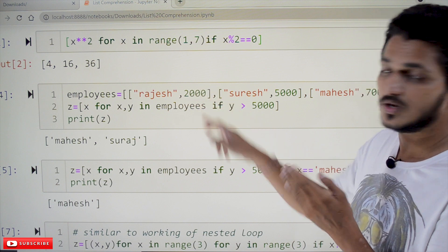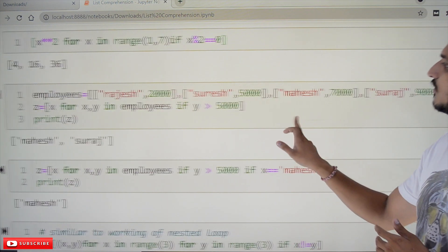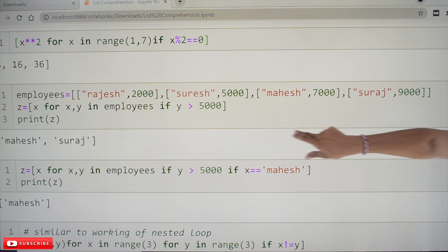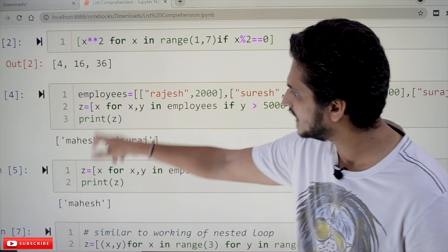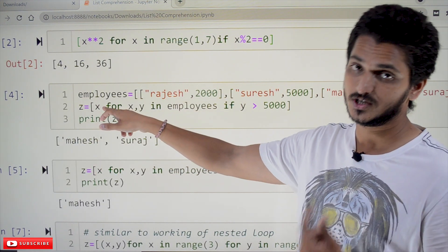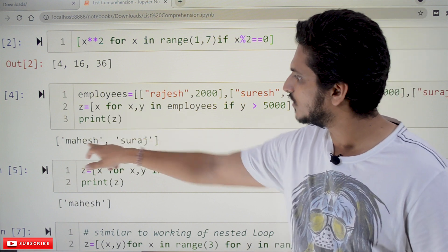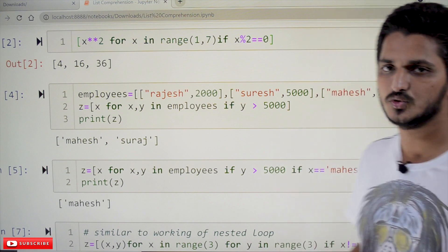If y greater than 5000 means consider the list that the data that consists of y. Y means here this value greater than 5000. So, for which Mahesh 7000, Suresh 9000. These two will be considered. So, Mahesh x is displaying. If you want to display y, you can display y also. Here we are displaying only x. So, Mahesh Suresh. These two will be displayed.